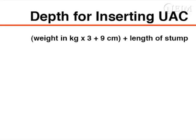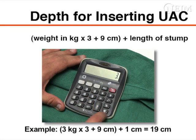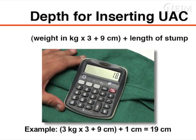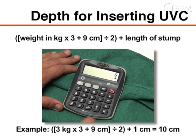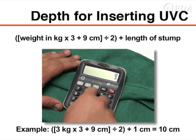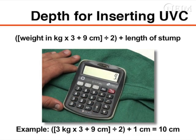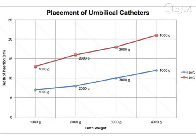There are many acceptable methods for determining the appropriate depth of placement. To calculate the depth for inserting a high-lying UAC, multiply the weight in kilograms by 3 and add 9 centimeters, then measure and add the length of the stump to this value. To calculate the appropriate depth for the umbilical vein catheter, or UVC, multiply the weight in kilograms by 3 and add 9 centimeters, divide that total by 2, then add 1 centimeter. Standardized graphs for determining depth of catheter insertion are available and included in the supplement.